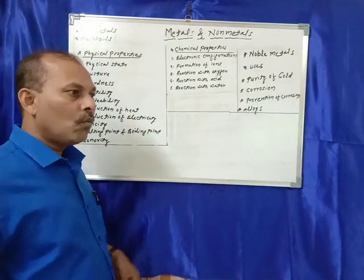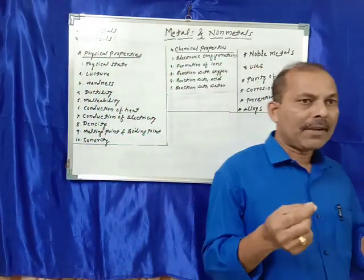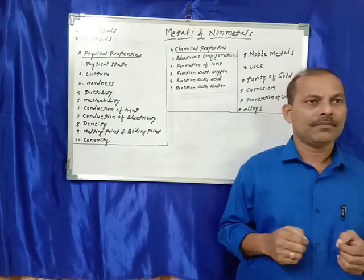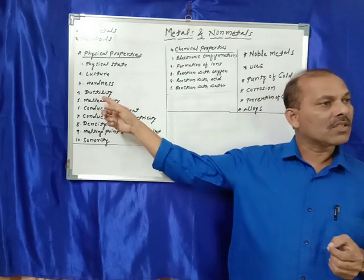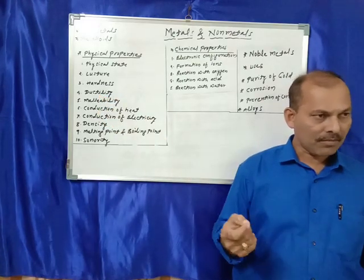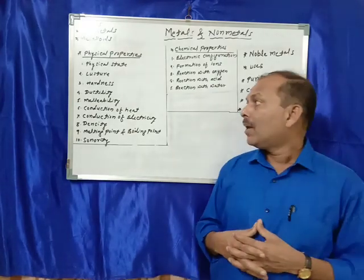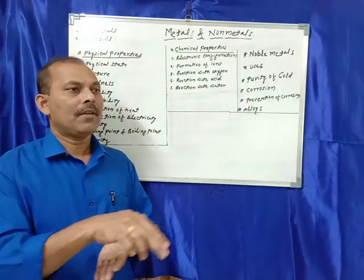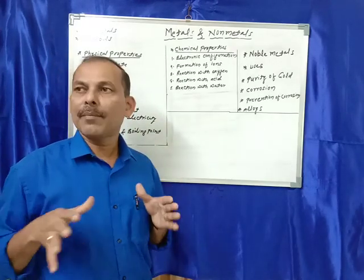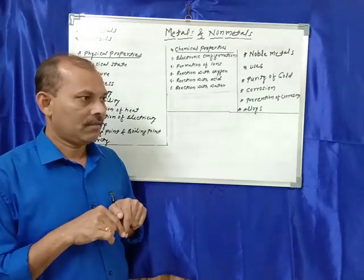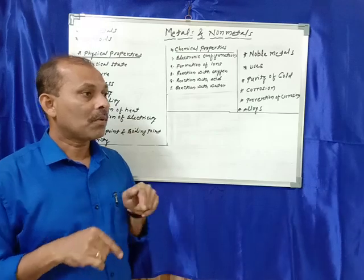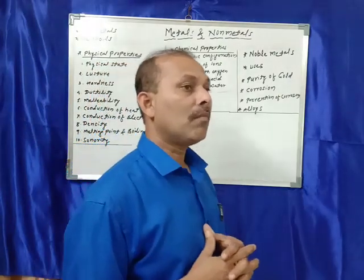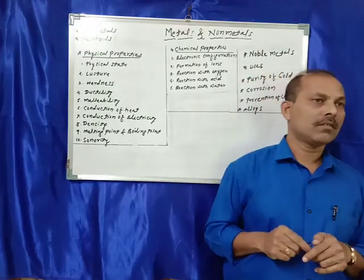Then ductility: we can prepare a wire from metals. This property cannot be seen in non-metals — we cannot prepare a wire from non-metals. Then malleability: if you press a metal, you will get a sheet of that metal. This property of metals is known as malleability. In case of non-metals, they are non-malleable — we cannot prepare a sheet from non-metals.